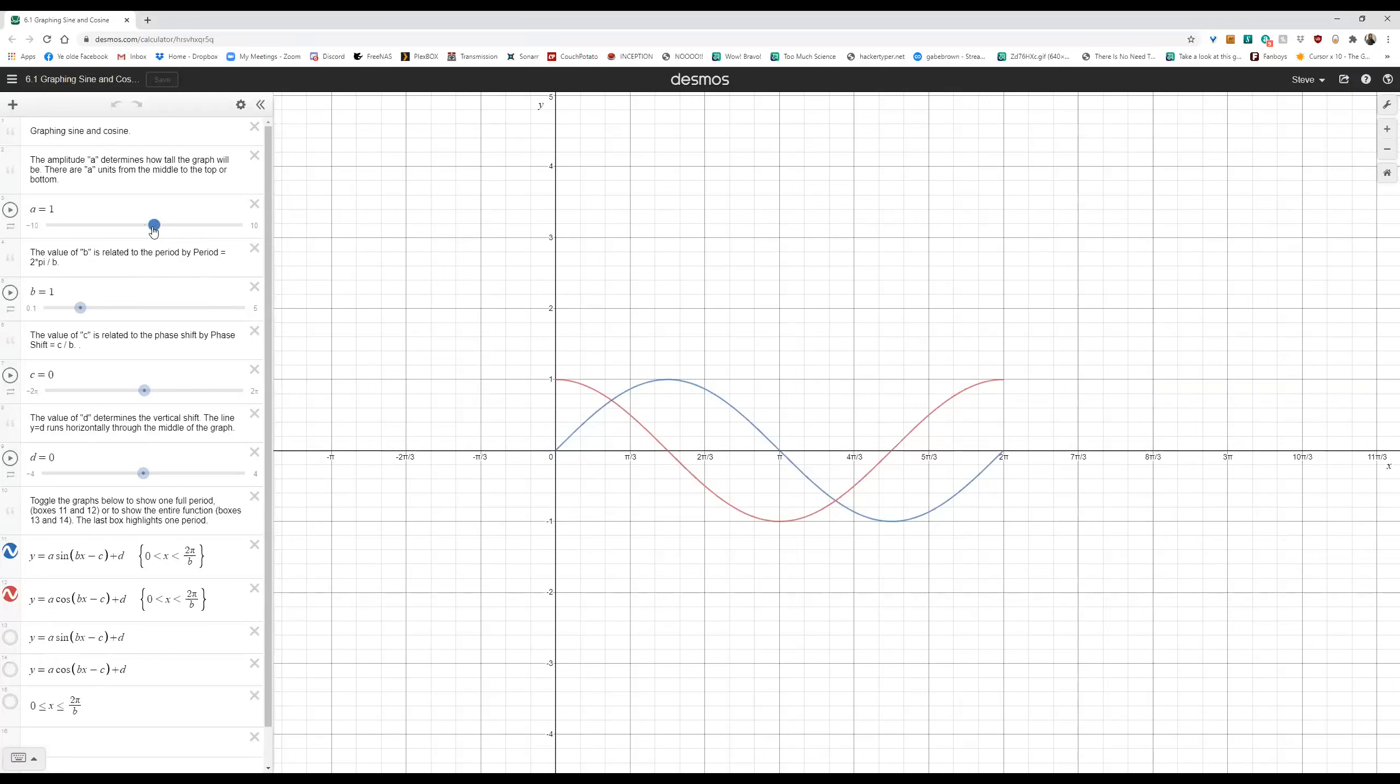So we have our graph of sine in blue and our graph of cosine in red, and if we change that value of a, we'll start there, that's going to stretch the graph vertically.